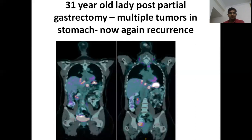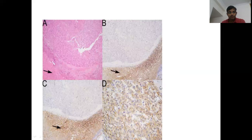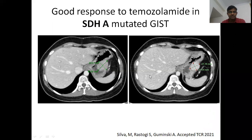Regarding therapeutic strategies in SDH-deficient tumours: a 31-year-old lady post partial gastrectomy had multiple tumours in the stomach, with recurrence and progression on imatinib and sunitinib. Lymph node involvement was noted — very indicative of SDH GIST, as this doesn't happen in typical GIST. SDH-IHC was negative (SDH-deficient), confirmed by negative staining versus positive control cells. The tumour was epithelioid GIST with absent spindle morphology. The patient was started on temozolomide based on methylation profiling, achieving a partial response after seven months. This is in publication.